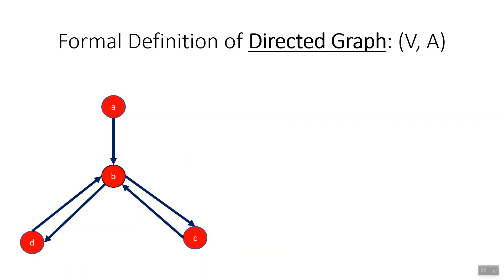Also, a directed graph is formally defined as a pair of sets V and A, where V is the set of vertices in the directed graph, and A is the set of all ordered pairs of vertices, representing the directed or one-way connections between vertices in the graph.